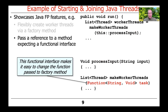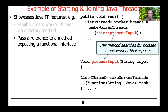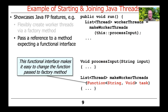The make worker threads factory method takes one parameter, which is a functional interface — the Function functional interface — which in this case is going to take a string (the input to search) and returns nothing, it returns void. And that matches the signature for process input. Process input takes a string and doesn't return anything, which is the function descriptor for the Function functional interface.